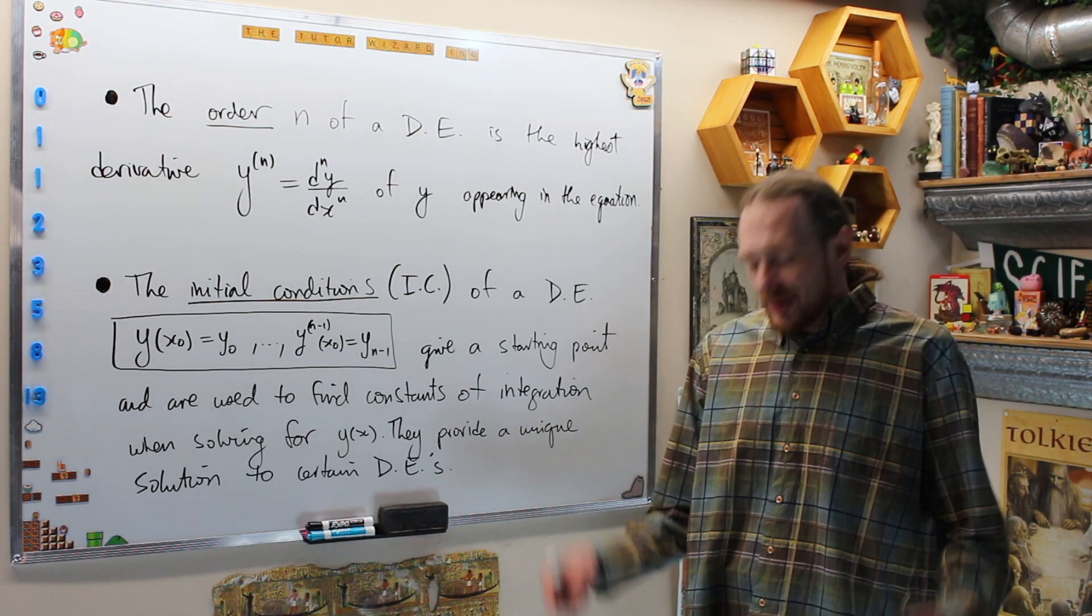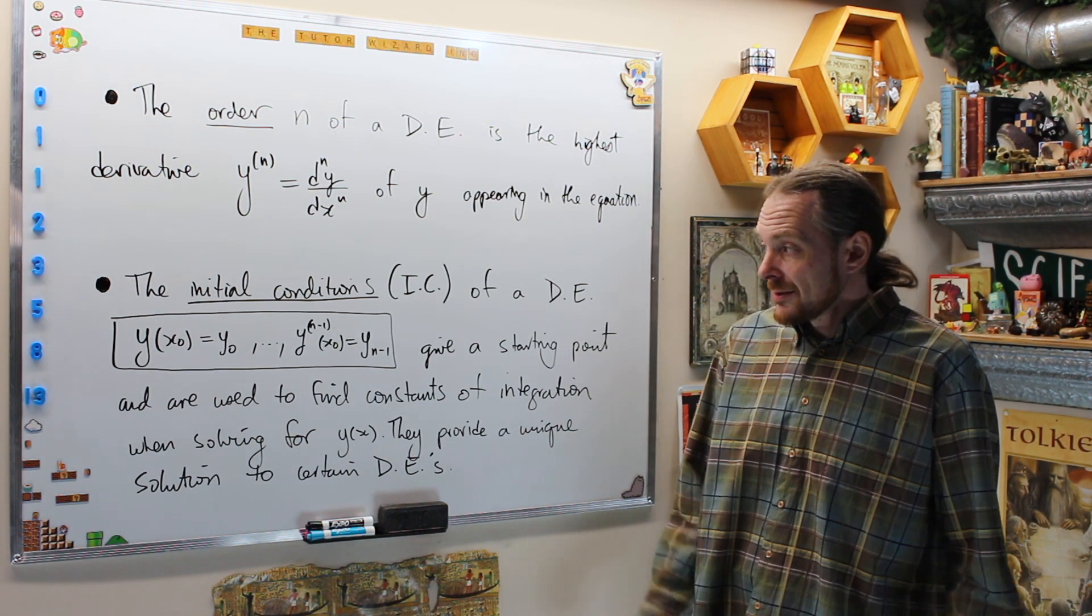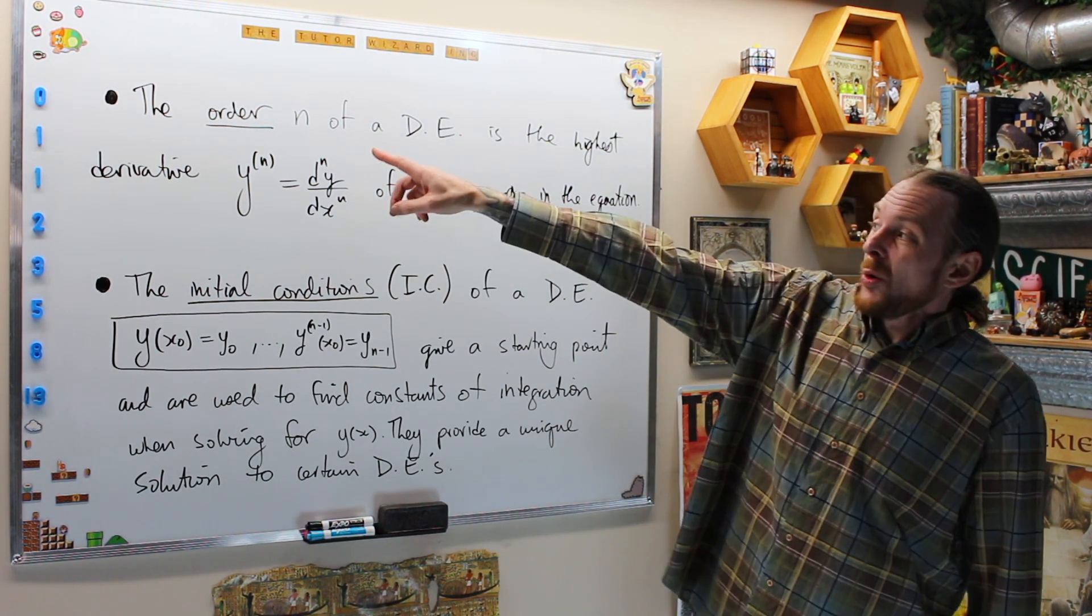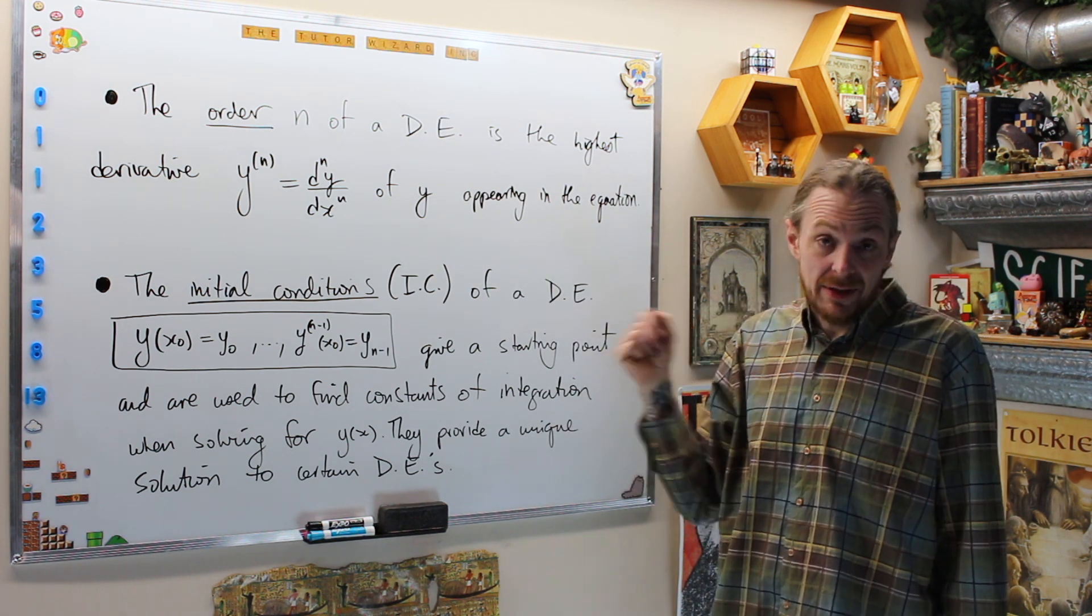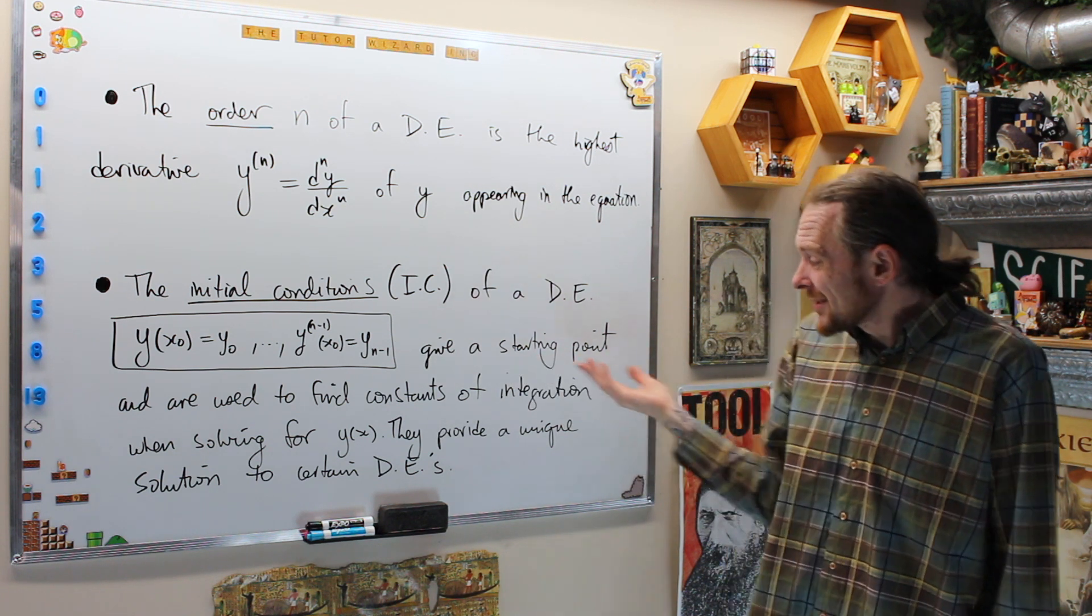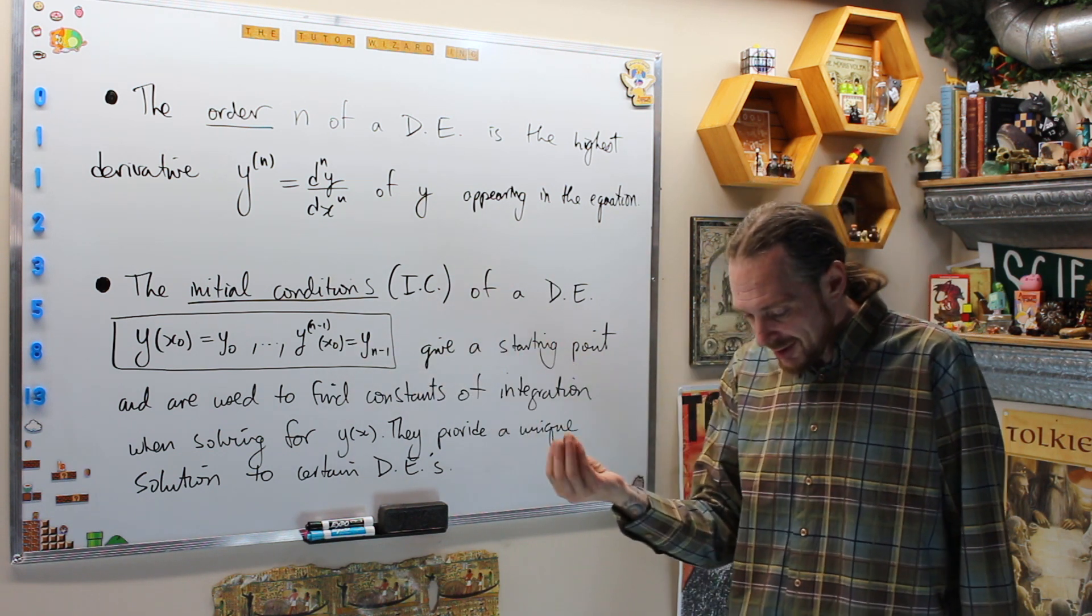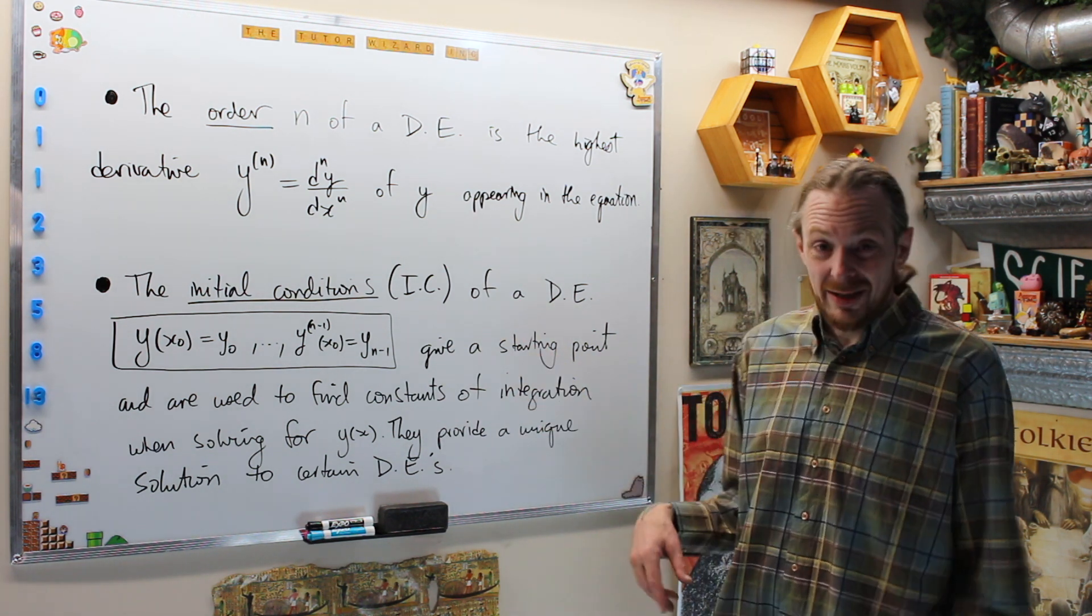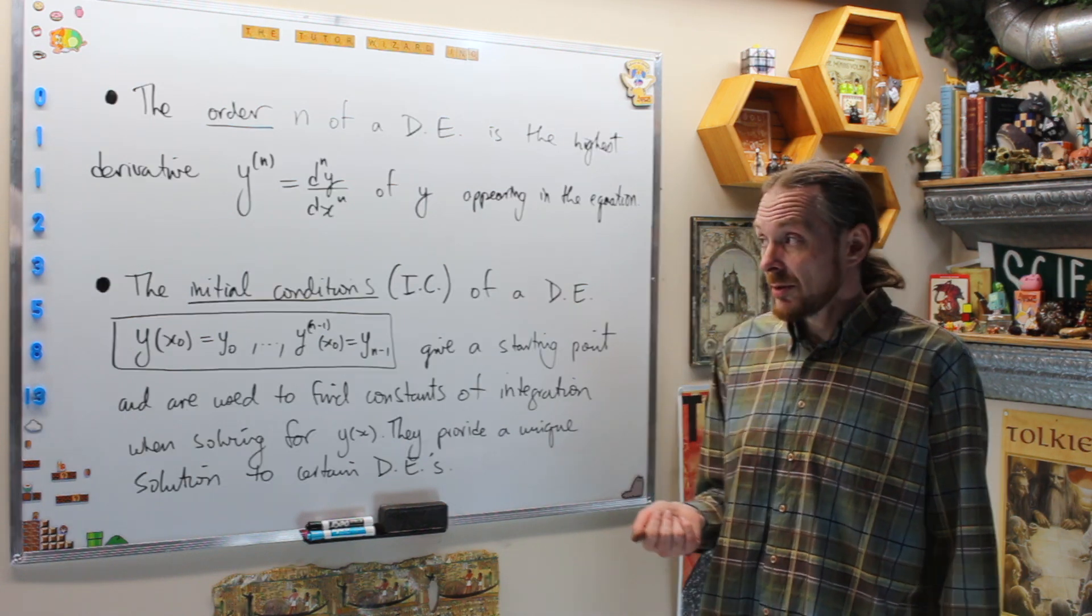Two other things, the terminology we need for a differential equation: specifically their order. What is the order? The order N is the highest derivative of Y appearing in the differential equation. The initial conditions of a differential equation give us a starting point at time or X values where we start analyzing the system and let it run forward from there. Initial conditions allow us to find the constant of integration and a unique solution for these differential equations.